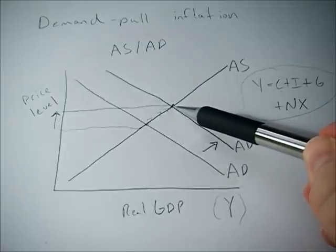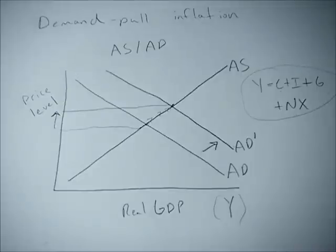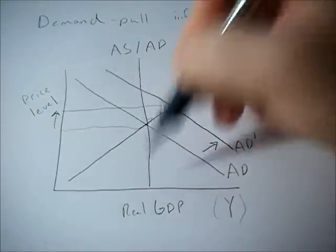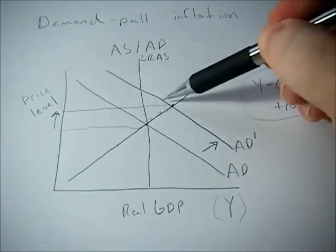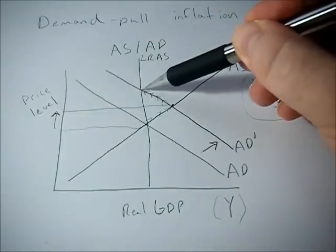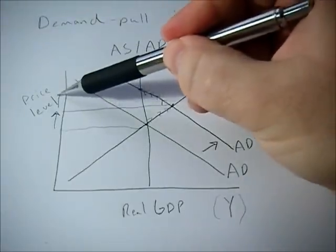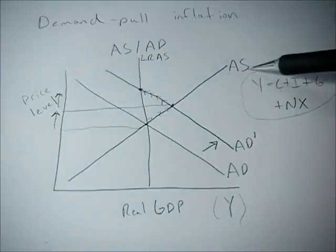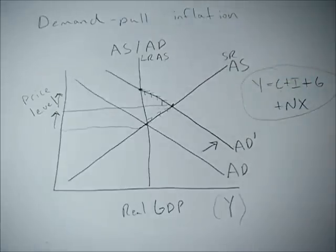Demand-pull inflation is not that difficult to understand: something changes in our real GDP function, aggregate demand increases, it intersects the aggregate supply curve at a new point, and the price level goes up. This is the short run. In the long run, if you're doing classical economics — and not every course covers this — we move back to our long-run real GDP level and the price level goes up even more. If your book or instructor didn't cover that, don't worry about it, but if you do have both short-run and long-run aggregate supply, that's what happens in the long run.